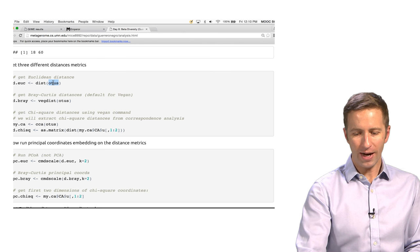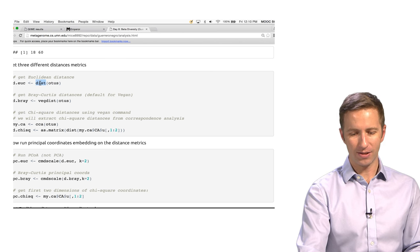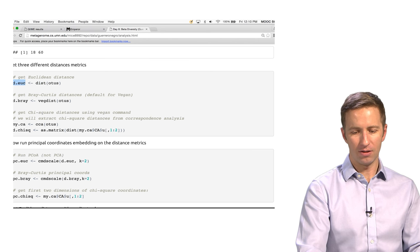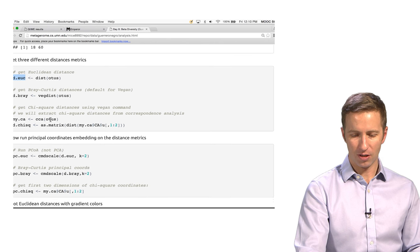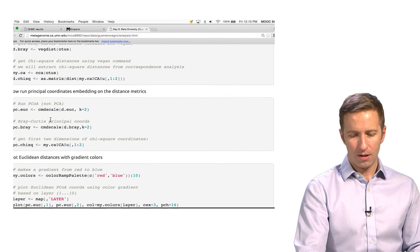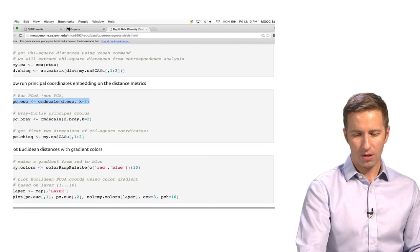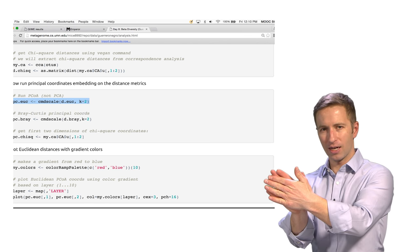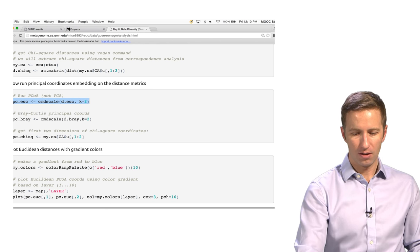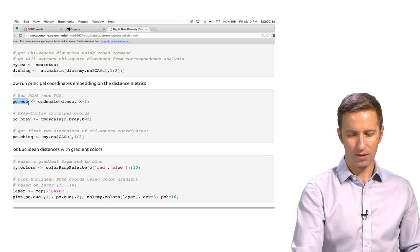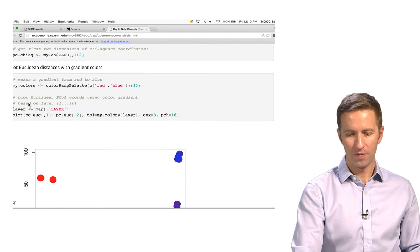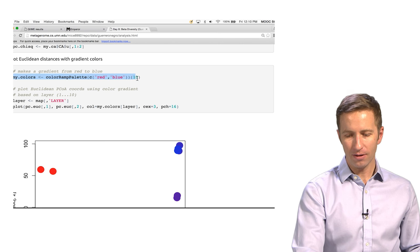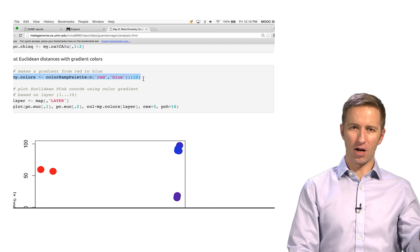The first one we'll look at is Euclidean. So once we have the OTU table read in, we just run this dist command and we store it. I just made up a variable named d-euc that I store that distance matrix in. This is the command we would use to run principal coordinates. So that's taking the whole distance matrix and collapsing it down to the best two axes. And storing it in this pc.euc variable.